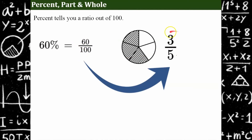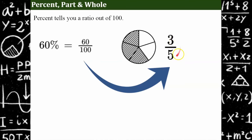Simplified, that's 3 out of 5. Both of these are divisible by 20. 60 divided by 20 is 3. 100 divided by 20 is 5. So in simplest form, it's 3 to 5. And we can consider this a ratio of a part to a whole.